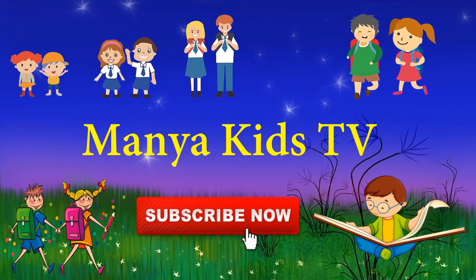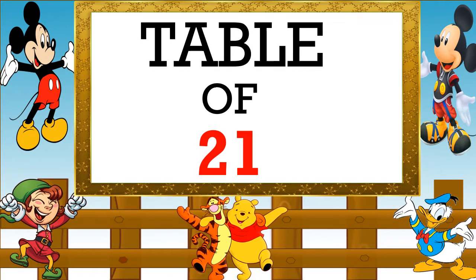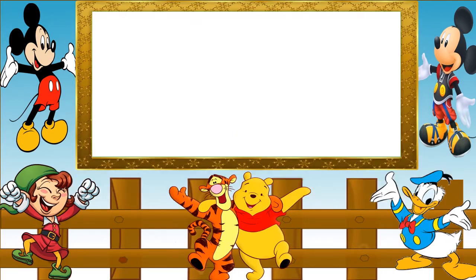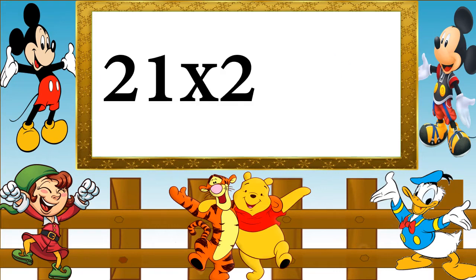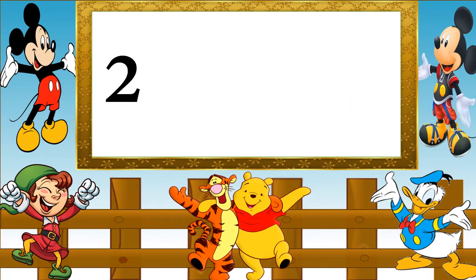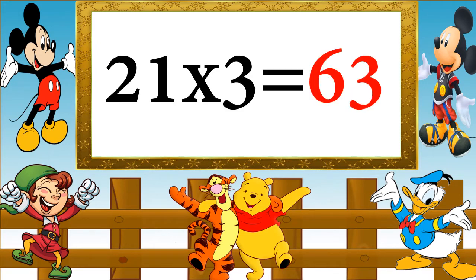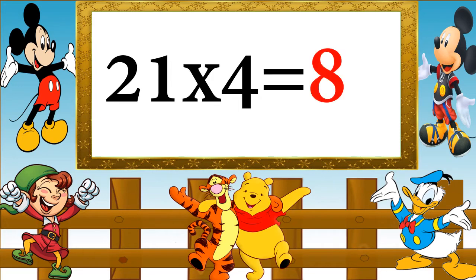Mania Kids TV. Table of 21 to 25. Table of 21. 21 ones are 21, 21 twos are 42, 21 threes are 63, 21 fours are 84.